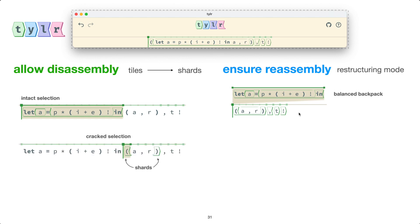Sometimes, though, our selection does not consist of complete tiles. And in this case, Tyler disassembled the parentheses tile into a pair of shards. And when a selection has a shard in it, we say that it's cracked. And then if we pick up an individual cracked selection into the backpack, we now say that the backpack is imbalanced.